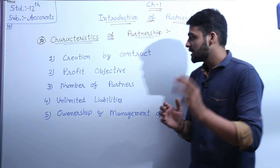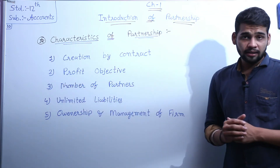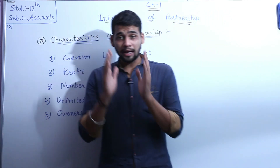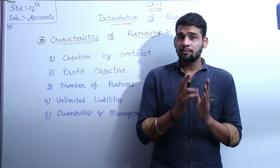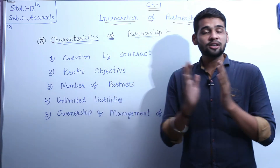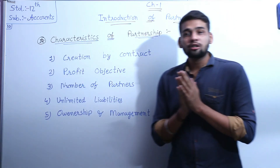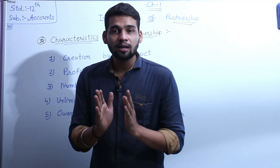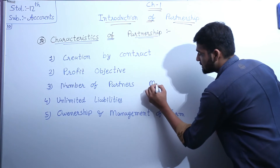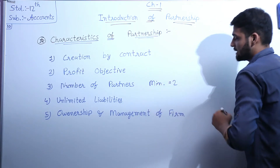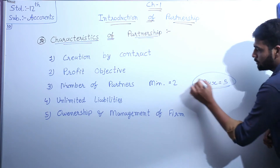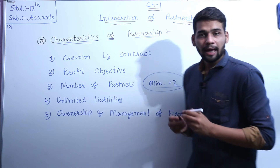The third characteristic is number of partners. Koi bhi partnership mein kitne partners hone chahiye — minimum aur maximum? Minimum two members hone chahiye tabhi partnership ka creation hota hai. And maximum, according to the Indian Partnership Act 1932, maximum 50 members hone chahiye. So minimum two members and maximum 50.